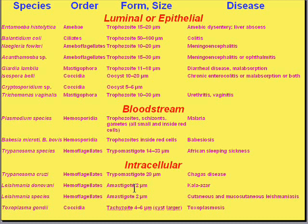Remember, the number one principle in parasitology — which applies, I think, to many other aspects of life, including politics — is that the successful parasite does not kill its host. Many gastrointestinal parasites stay limited to the mucosa. Blood parasites, protozoans like plasmodium, babesia, and trypanosomes, actually invade the bloodstream and red cells. A wide variety of small ones, like trypanosomiasis, leishmaniasis, and toxoplasma, actually enter cells. So you can think of it as a progression of invasiveness.